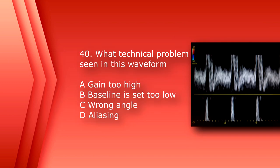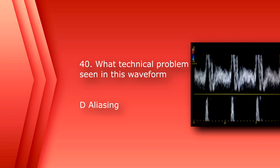Number 40: what technical problem is seen in this waveform? A. Gain too high, B. Baseline is set too low, C. Wrong angle, or D. Aliasing. The answer is D, aliasing — you can see the peaks of the waveforms wrapping around and coming under the baseline.